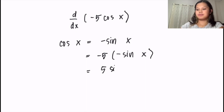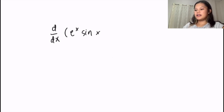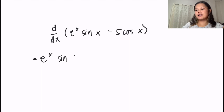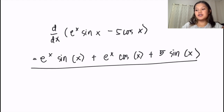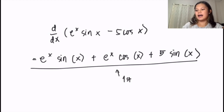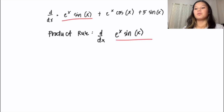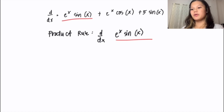After getting the derivatives, we need to combine the two. We have e to the power of x sin x plus e to the power of x cos x plus 5 sin x. As there are no like terms, this is our first derivative. We set this aside because we are not yet done — we are going to find the second derivative as asked in problem number 1. With the same process, we are going to find the second derivative.